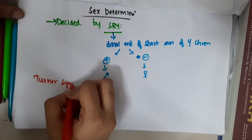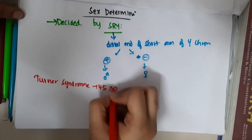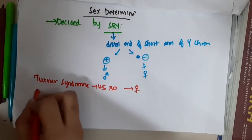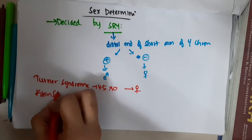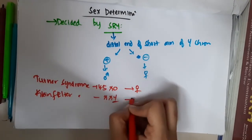Turner syndrome, that is 45 XO. Because X chromosome is present, Y chromosome is absent, so the baby is female. In Klinefelter syndrome, though there are two X chromosomes, XXY, because of Y chromosome the baby is male.